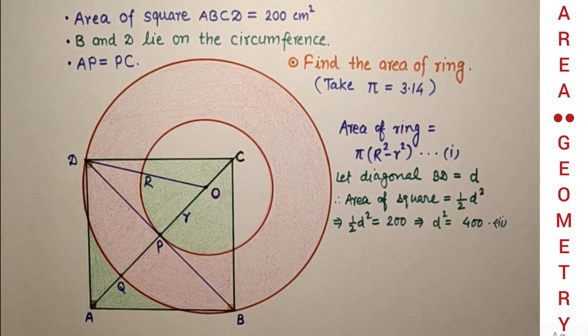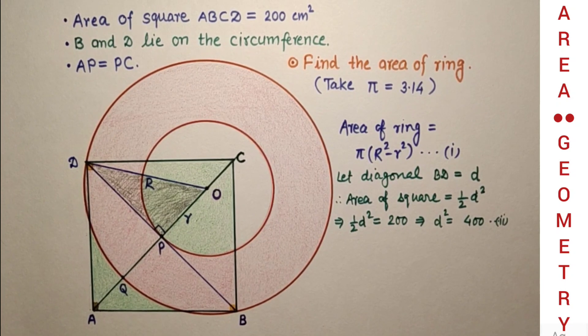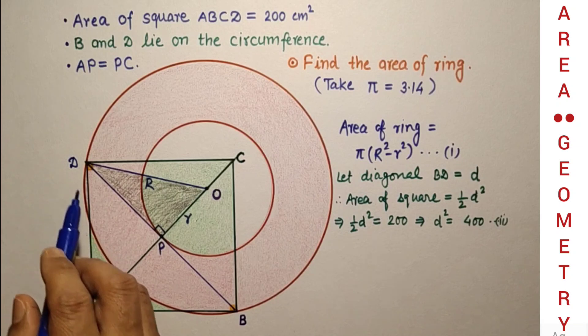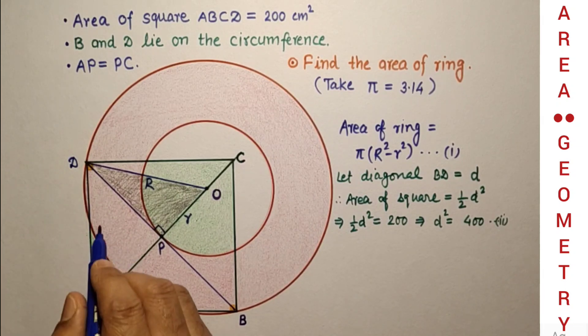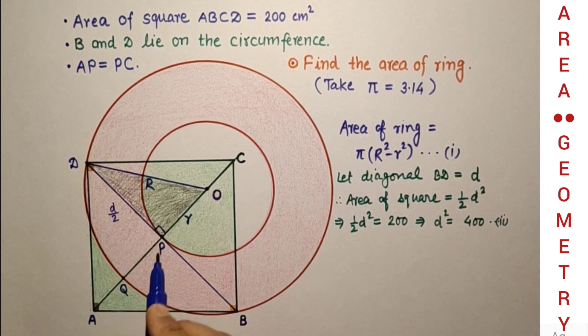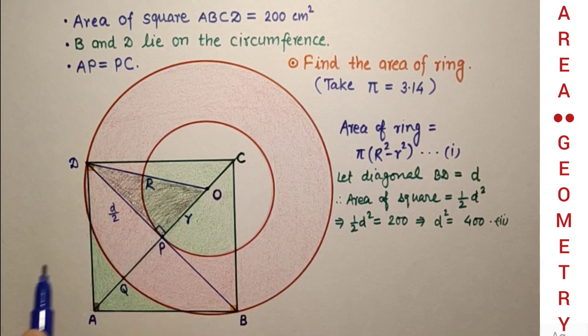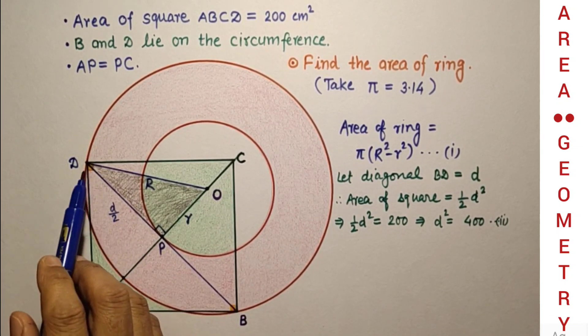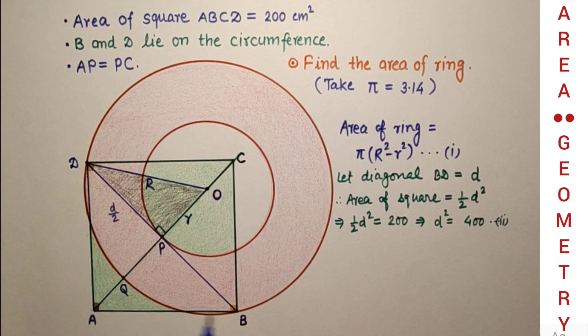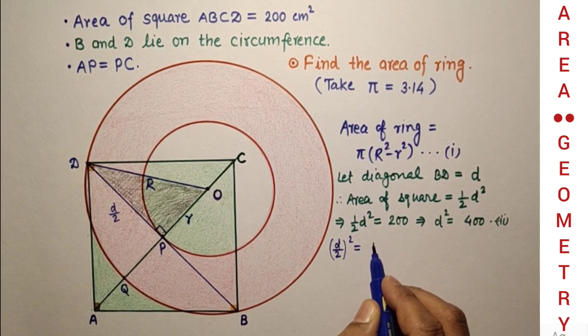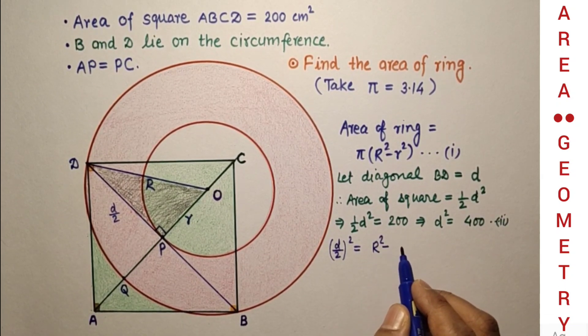Considering this triangle OPD, DP is half of the diagonal, so DP = d/2. We are going to use the Pythagorean theorem for this right triangle. By Pythagorean theorem, (d/2)² = R² - r².